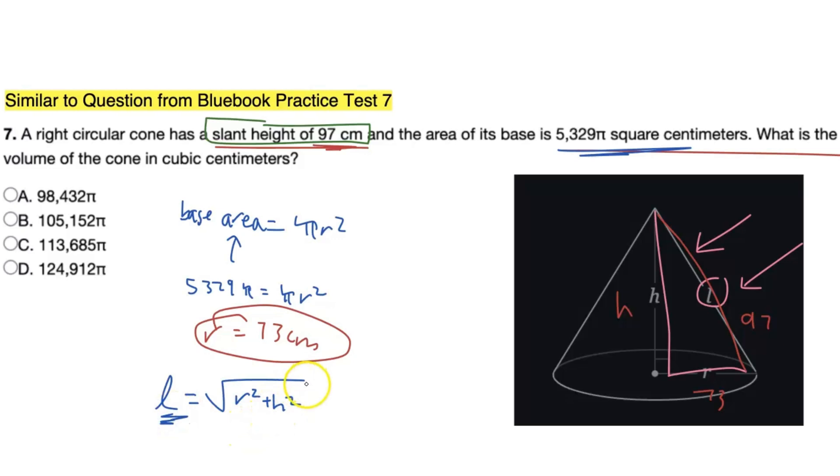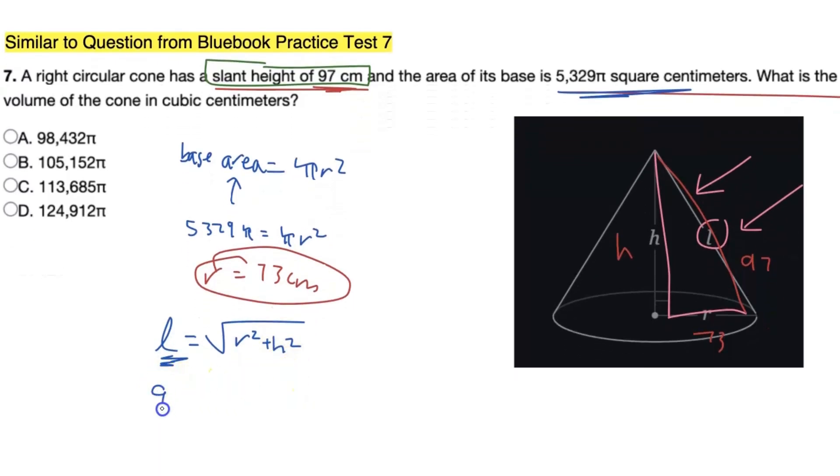So we know the radius, our radius here is 73. Our height is unknown, that's what we're trying to solve for. We know our slant height is given as 97. So now we can use the Pythagorean theorem, a² + b² = c². So let's set that up. If you subtract 73² from 97² and take the square root of both sides, we're going to get the height equals 64 centimeters as the height.